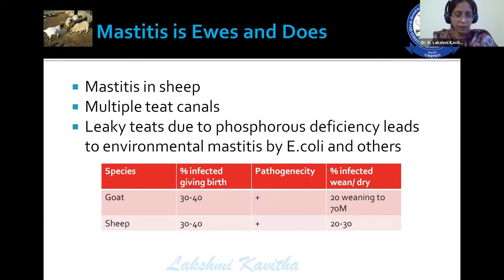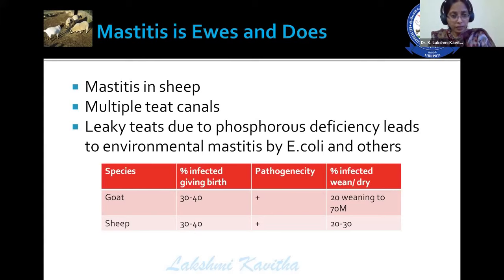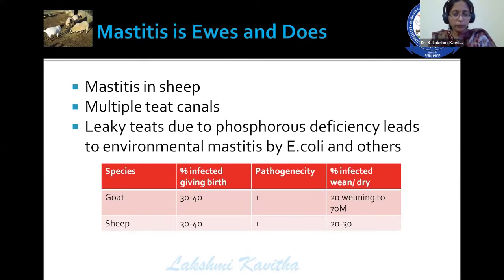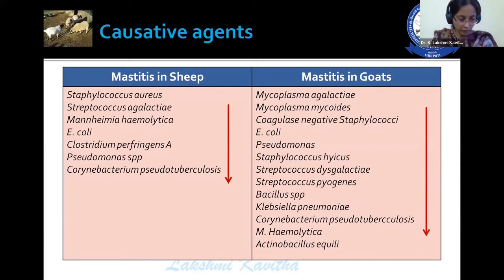Mastitis in sheep may be because of multiple teat canals or leaky teats, or because of deficiency of phosphorus, which leads to environmental mastitis by E. coli. The species affected: 30 to 40 percent get affected while giving birth, and 20 percent during weaning, or 70 percent during the dry period. In case of sheep, 30 to 40 percent at the time of giving birth and 20 to 30 percent during weaning or dry period.